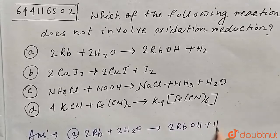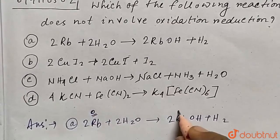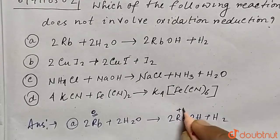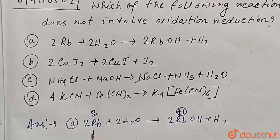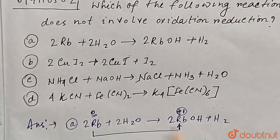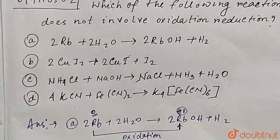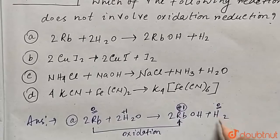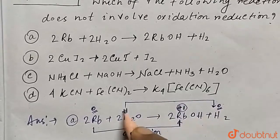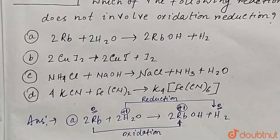Rubidium in its free state is an alkali metal with oxidation state 0. In rubidium hydroxide, rubidium is +1 and OH is -1, so rubidium gets oxidized from 0 to +1. For hydrogen, it has oxidation state +1 in water, but in free H₂ its oxidation state is 0, so hydrogen is reduced from +1 to 0. Therefore, reaction A is a redox reaction.